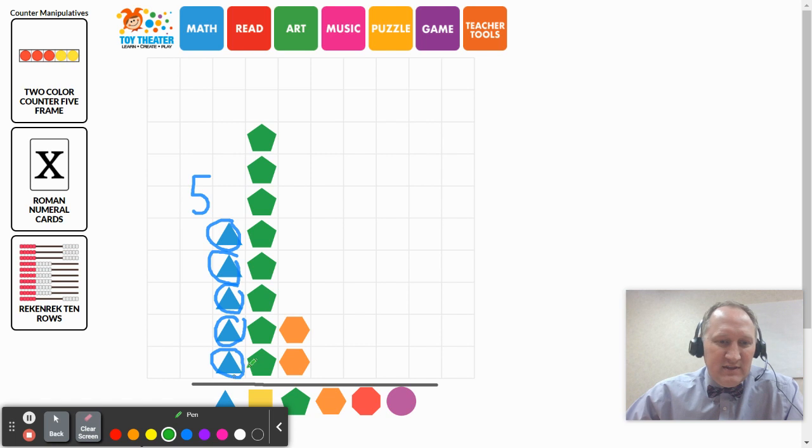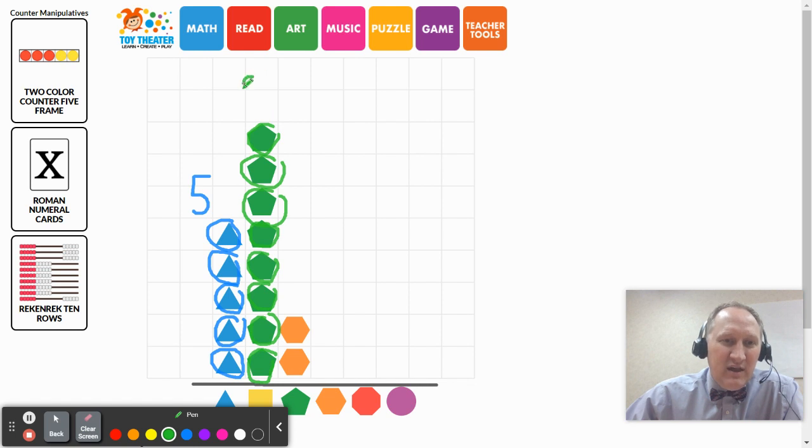Let's go ahead and count these green pentagons. Pentagons have five sides. Let's count them. One, two, three, four, five, six, seven, eight. Eight. All right. I've got eight green pentagons.